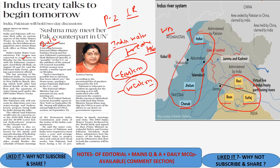The next meeting of the Permanent Indus Commission is scheduled in Lahore. Pakistan has raised concerns over two dams: the 1,000 MW Pakal Dul dam and the 48 MW Lower Kalnai hydroelectric project on the River Chenab. The timely and smooth sharing of hydrological data related to dam construction on shared rivers is also likely to be discussed in the upcoming meeting.